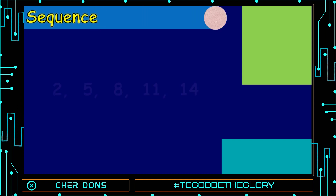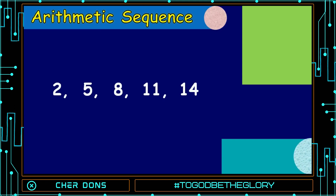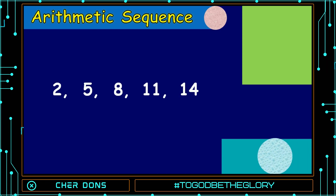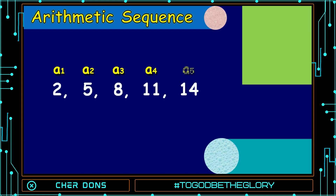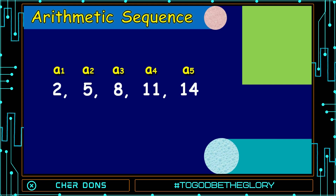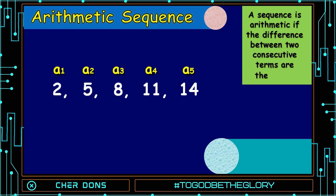Alright, we have here a sequence: 2, 5, 8, 11, and 14. Here A1 is 2, A2 is 5, A3 is 8, A4 is 11, and A5 is 14. Let's find out if it is an arithmetic sequence or not. A sequence is arithmetic if the difference between two consecutive terms is the same.